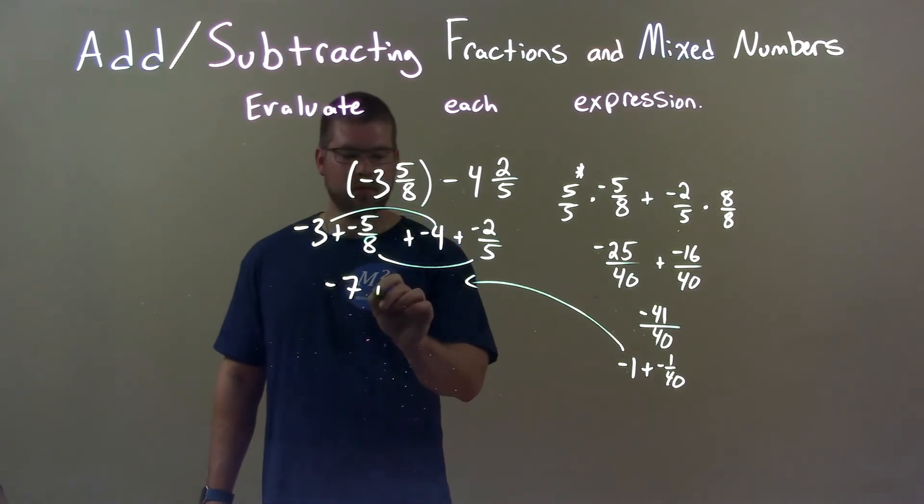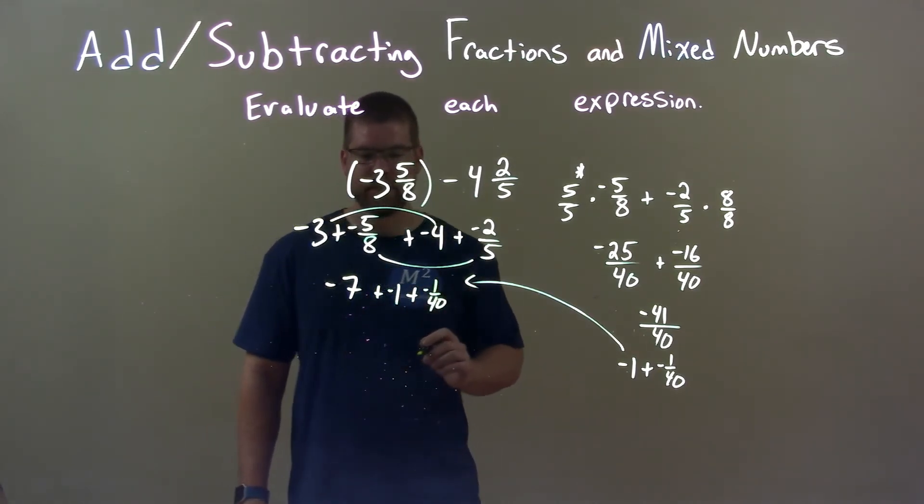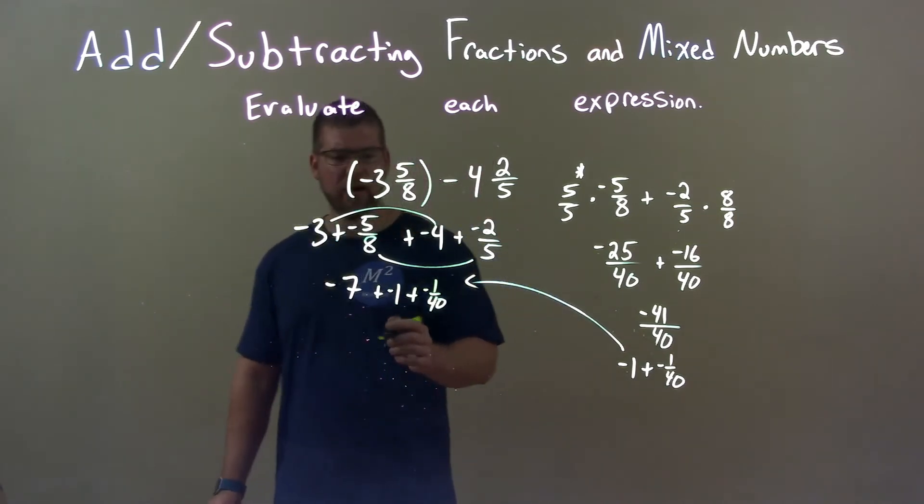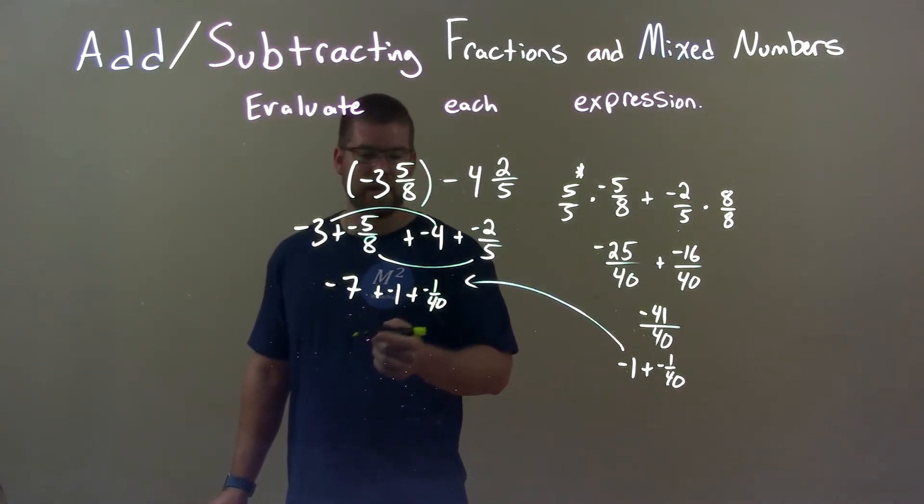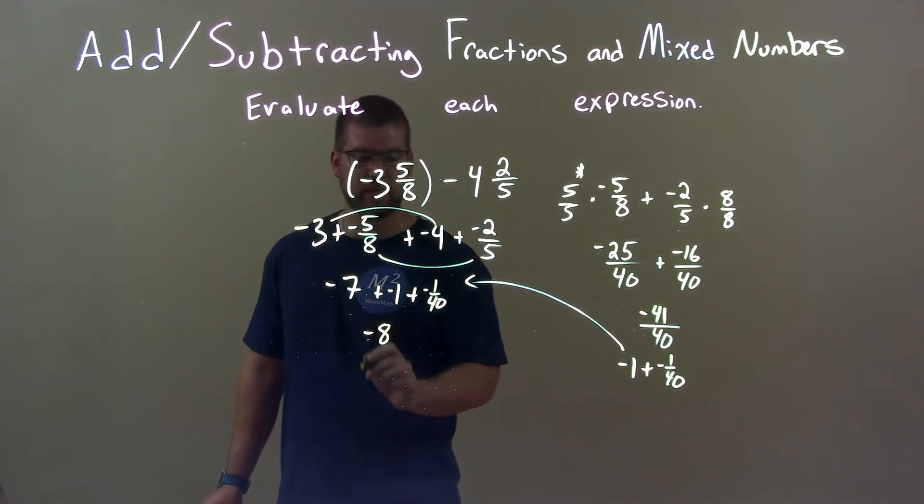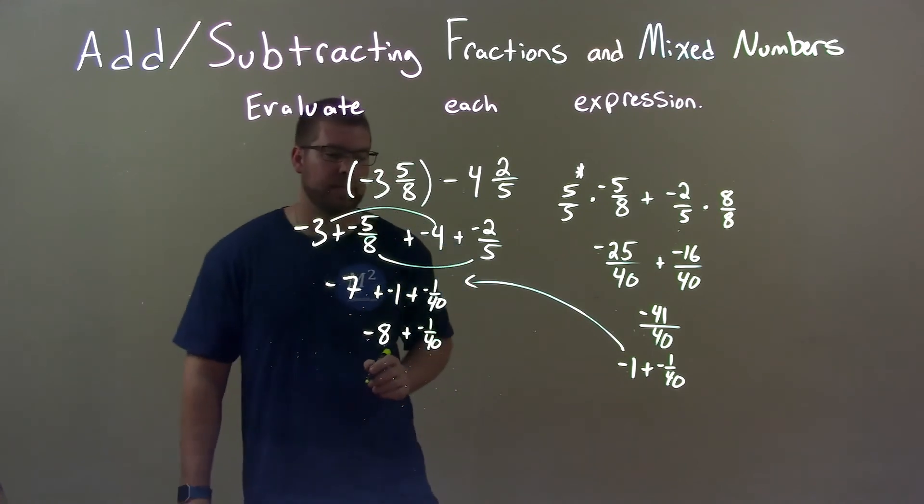Bring that over here, plus negative 1 plus negative 1 over 40. All right, so now we have negative 7 plus negative 1, which is negative 8, okay? And then we bring down negative 1 over 40, plus negative 1 over 40, right there.